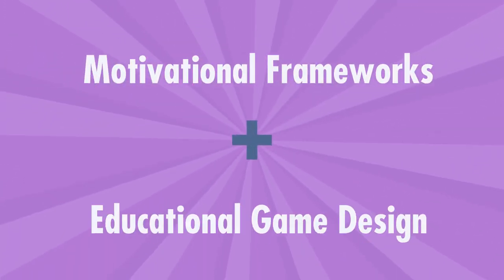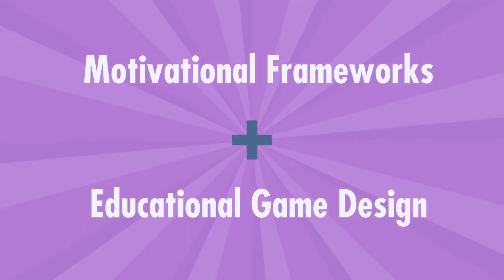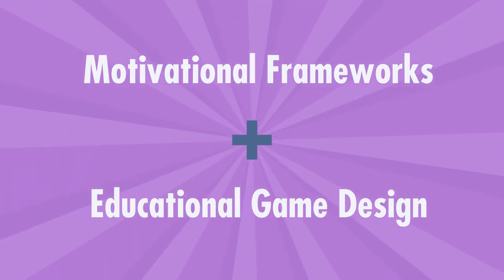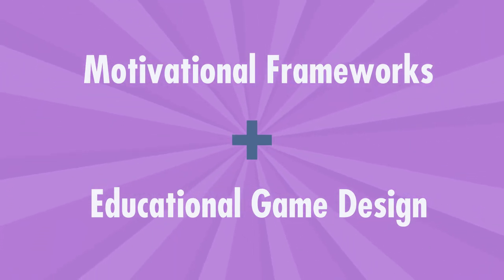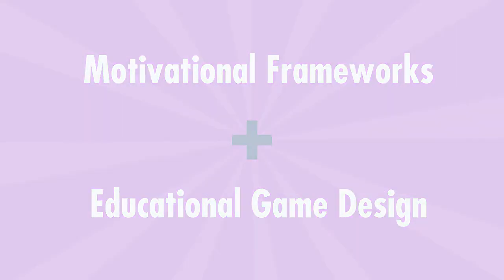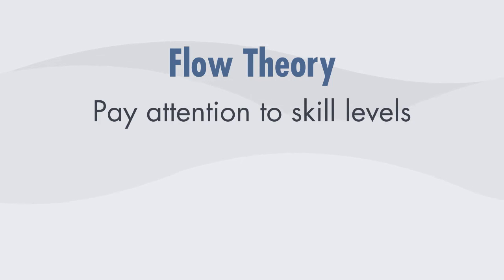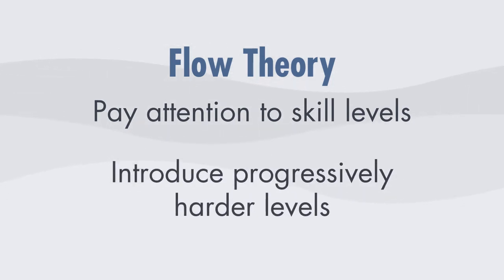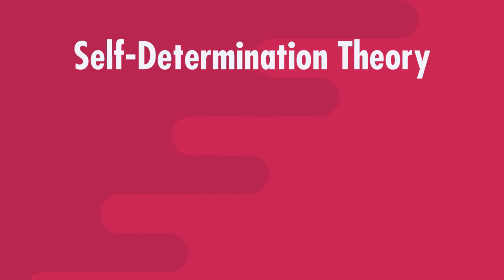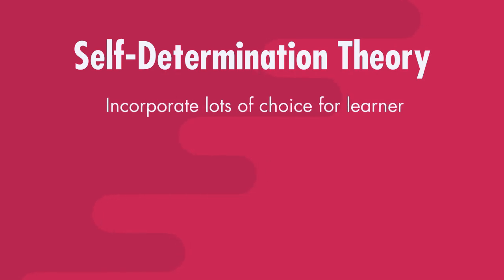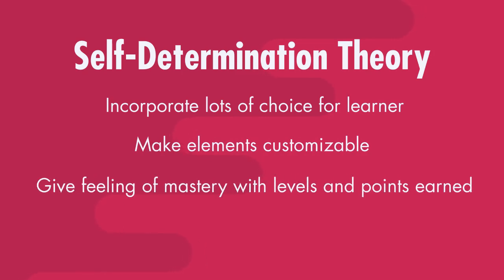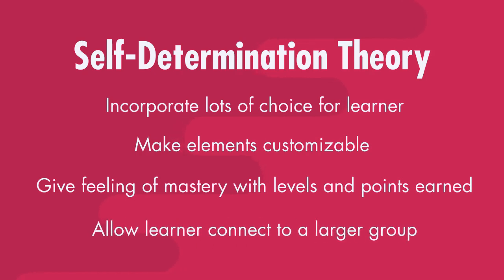So what are the implications of these frameworks on educational game design? There are a lot of different tactics to consider, particularly given the amount of overlap we've seen. Starting with flow, some tactics include paying attention to skill levels and introducing progressively harder levels as we go along. With self-determination theory, we might want to incorporate lots of choices for the learner, make elements customizable, give learners a feeling of mastery with levels and points earned, and let the learner connect to a larger group through competition with peers, leaderboards, group play, or teams.